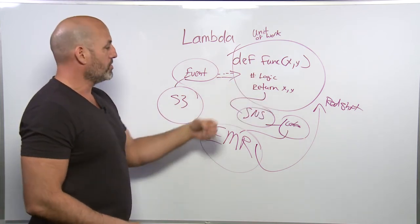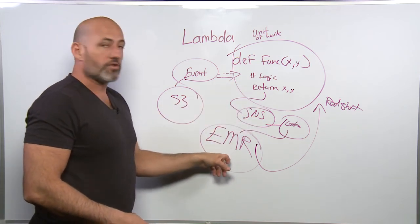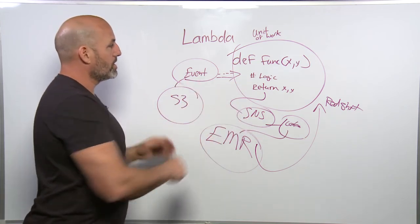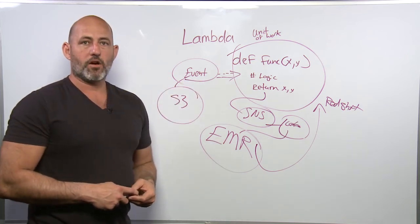And it can respond to events. It can respond to a trigger. It can respond to a message. It can fire off other services. So really you can think of Lambda as one of the most useful building block components of a big data architecture.